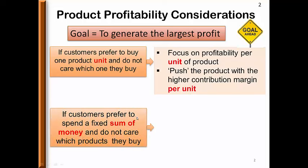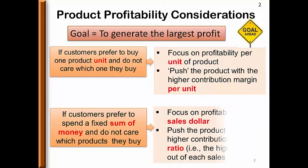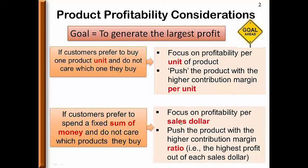If customers prefer to spend a fixed sum of money and don't care which products they buy, the company should focus on the sales dollar — out of every sales dollar, which product is most profitable. Push the product with the higher contribution margin ratio, where the denominator is the sales dollar. It's the highest profit out of each sales dollar that a company can generate.